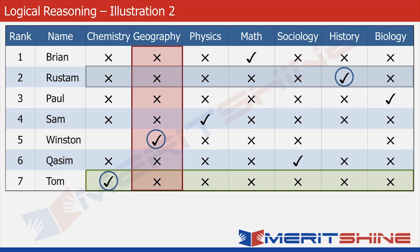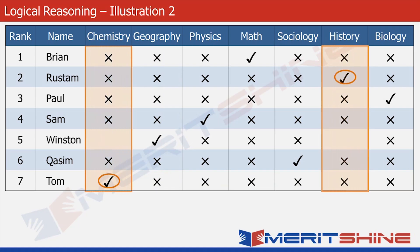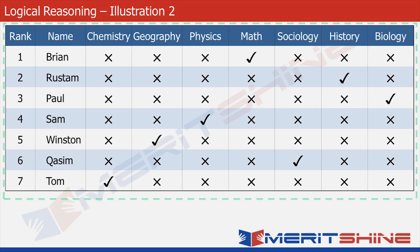Now the last step. Look at the two highlighted columns — one of chemistry and the other of history. A check is already there in both of these columns. Since we can put only one check in a column, we proceed to cross the rest of the vacant cells in the two columns. And with this, we have completed our table.